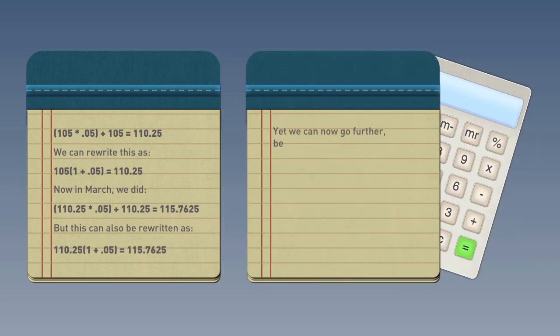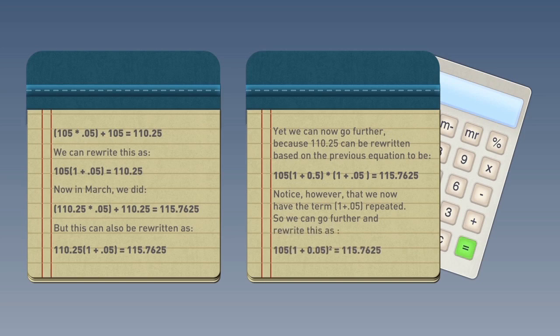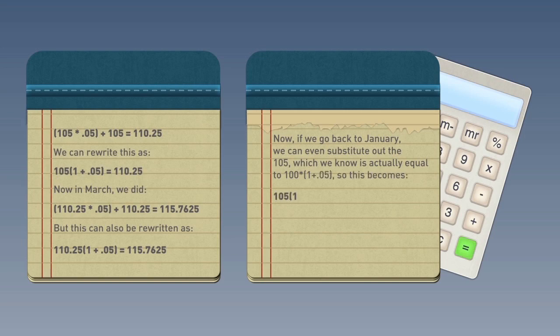Yet, we can now go further, because 110.25 can be rewritten based on the previous equation to be... Notice, however, that we now have the term 1 plus 0.05 repeated. So we can go further and rewrite this as... Now, if we go back to January, we can even substitute out the 105, which we know is actually equal to 100 times 1 plus 0.05. So this becomes...